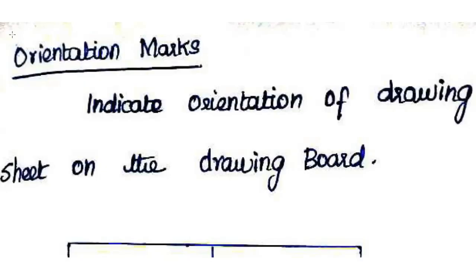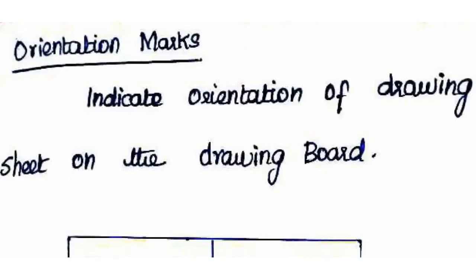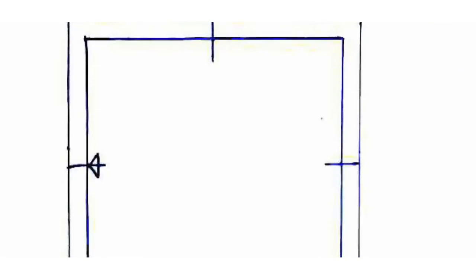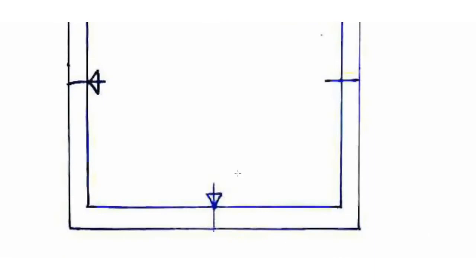Next are orientation marks. Orientation marks are drawn on the drawing sheet and give reference points to the centre mark. They should be placed at 2 corners — one on the long side and one on the short side. The arrow points toward the centre mark.